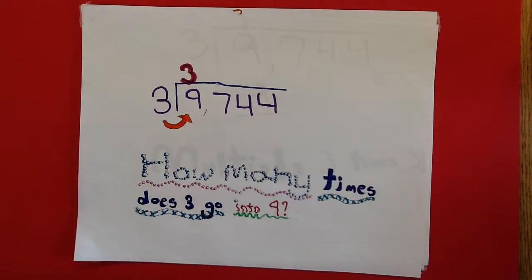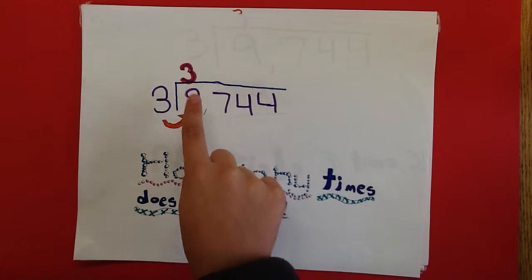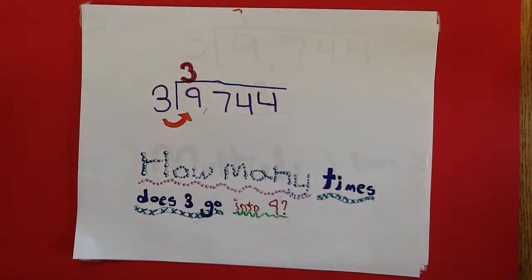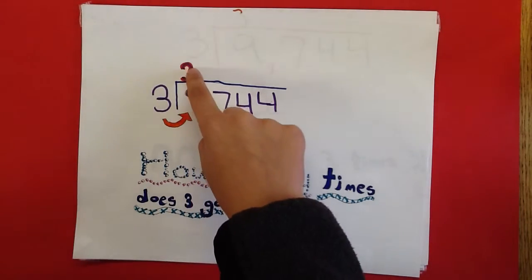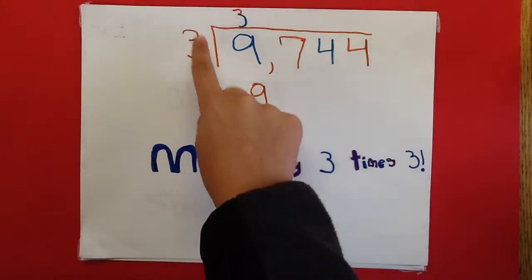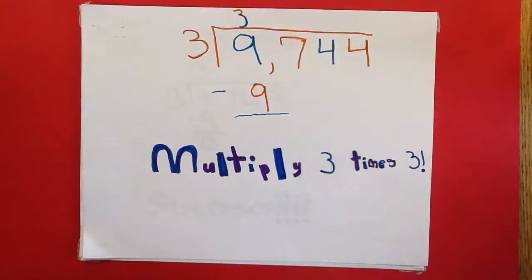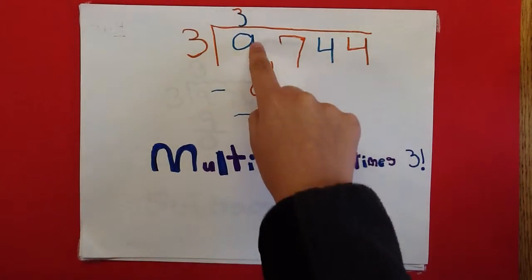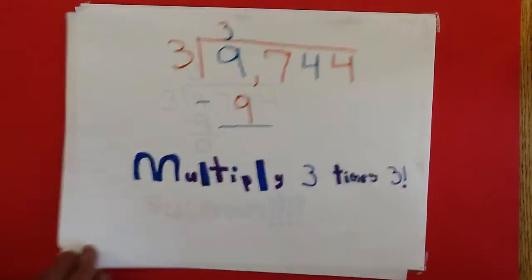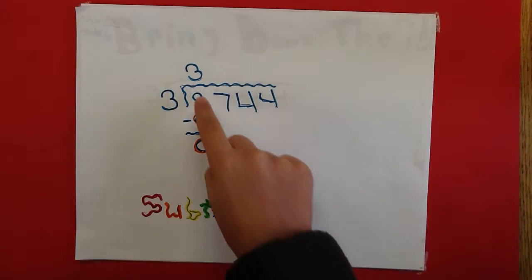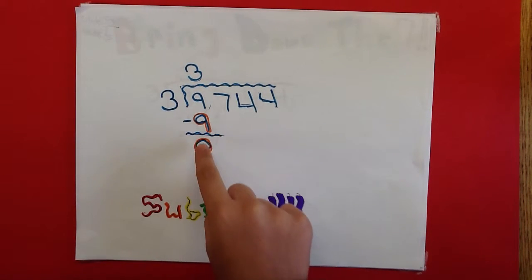Check how many times 3 goes into 9. 3 goes into 9 three times. Write your answer above the 9. Now multiply 3 times 3. It equals 9. Write the 9 under the 9. Now you subtract 9 from 9 which equals 0.